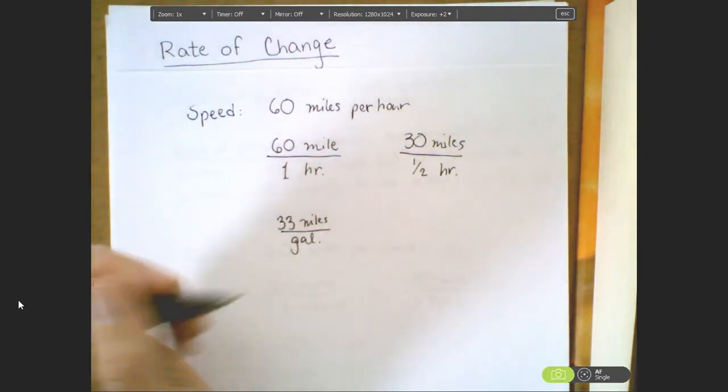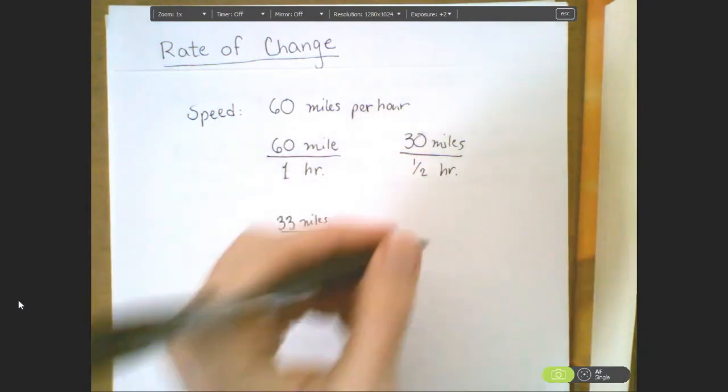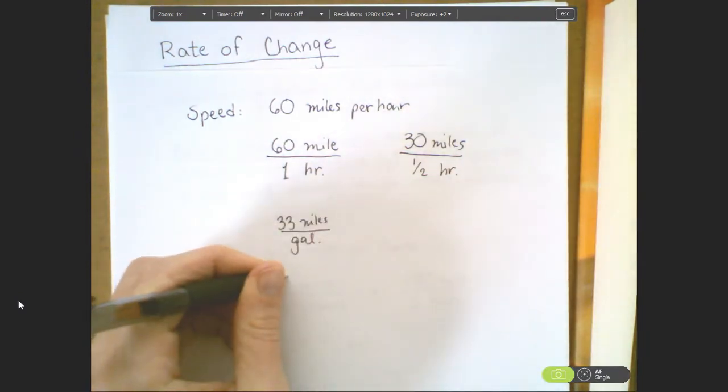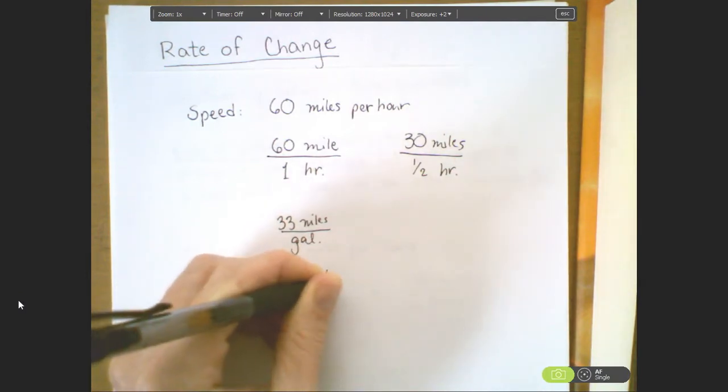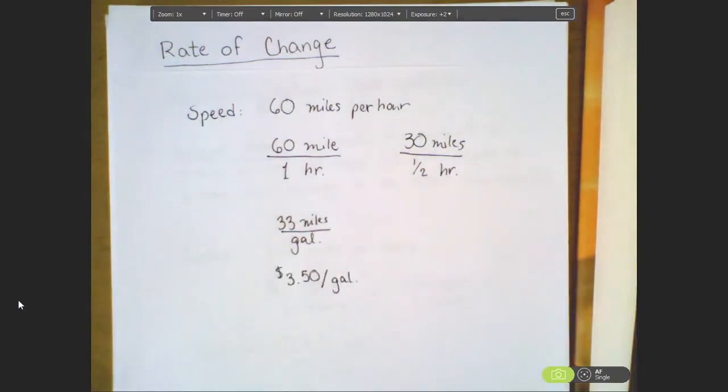We could also say that gallons cost, let's see, it's usually what, like $3.50 per gallon is also another type of rate.